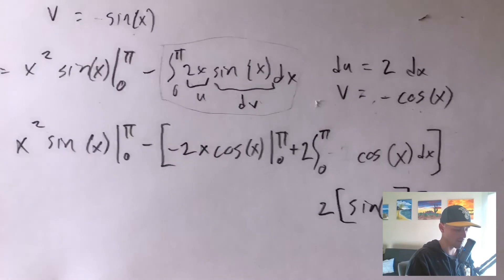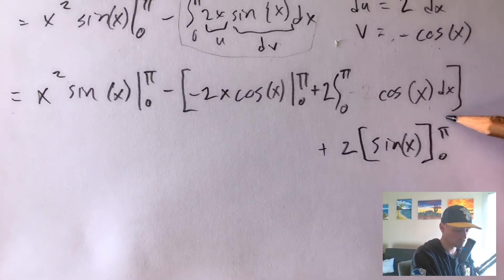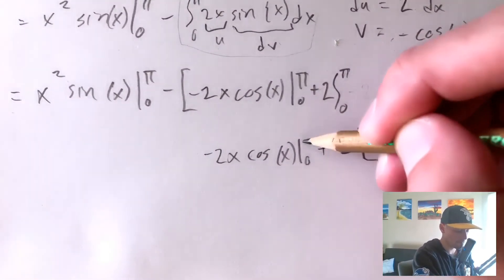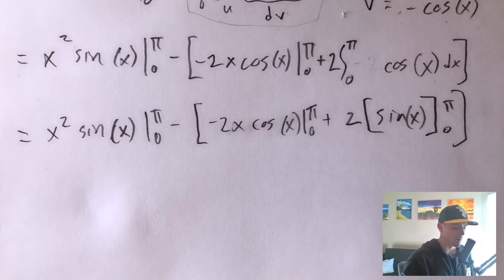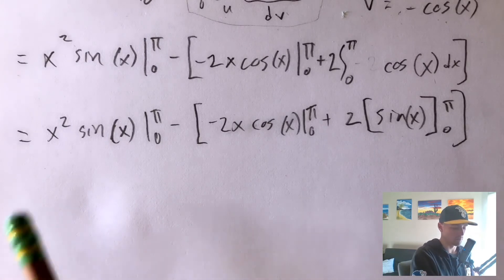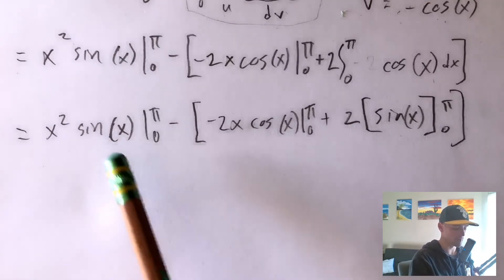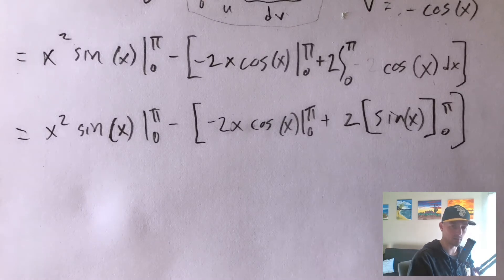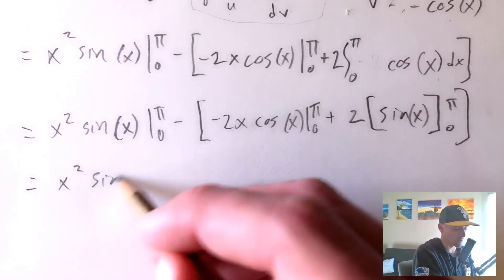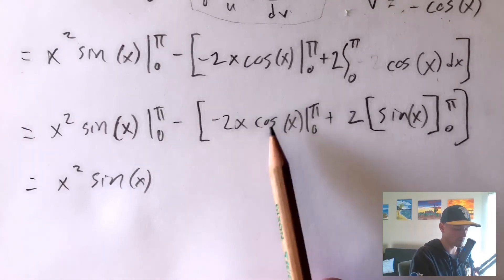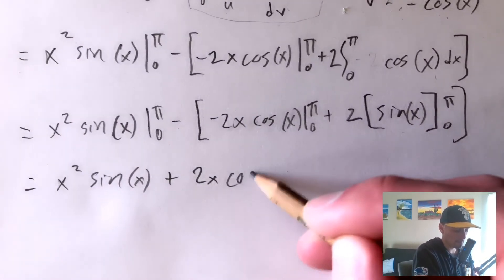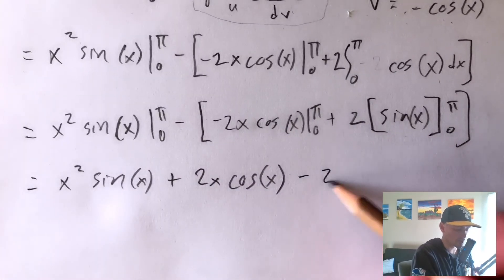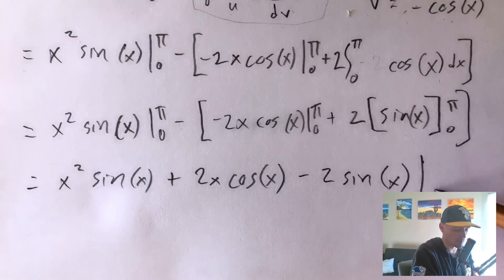Now we've rewritten the original integral with no more integrals remaining — all pieces are being evaluated from zero to pi. We can combine everything: x squared sine x, then distributing the negative to both remaining pieces gives us plus 2x cosine x, and then minus 2 sine x. So the full expression is x squared sine x plus 2x cosine x minus 2 sine x, all evaluated from zero to pi.